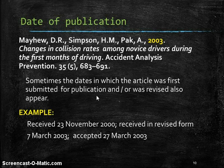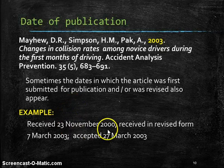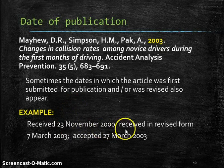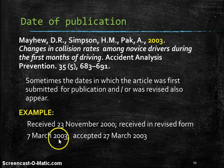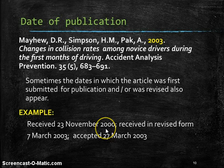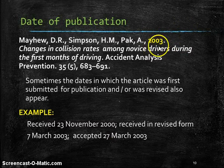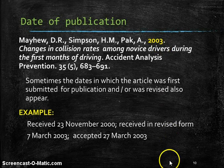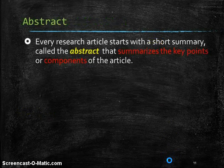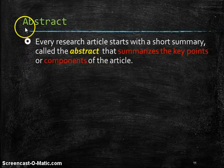The other thing that we often have, and it's sometimes very confusing, we'll see a bunch of other dates. Received November 2000, received and revised form March 2003, accepted 2003, and it just shows some earlier dates that the article was submitted to the journal. The one that we're interested in is the one that appears in the reference, 2003.